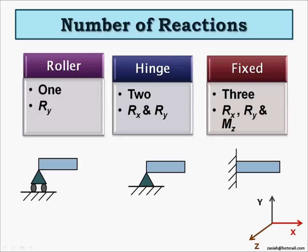Now we will give you a clear picture on the total number of reactions of all those supports. Let's start with the roller support. Roller support has only one reaction, and that is the vertical reaction Ry.